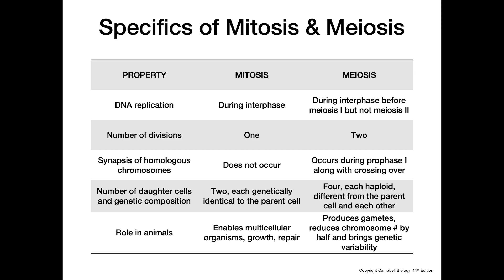Regarding the synapsis of homologous chromosomes: in mitosis that never happens because we don't have homologous chromosomes at all in any of that process. However, in meiosis we have synapsis taking place only during prophase I, where homologous chromosomes are still present in the cell and crossing over takes place, but not during prophase II, because by that point we've separated the homologous chromosomes and only sister chromatids remain in the cell.